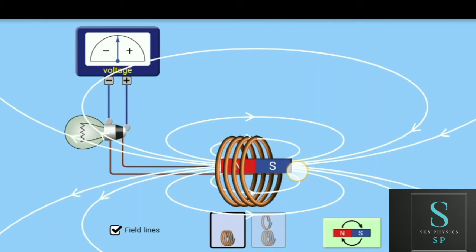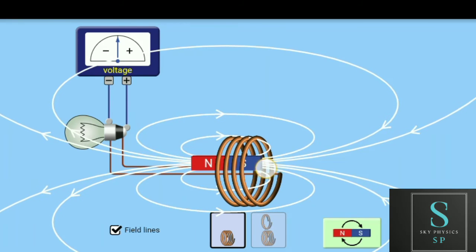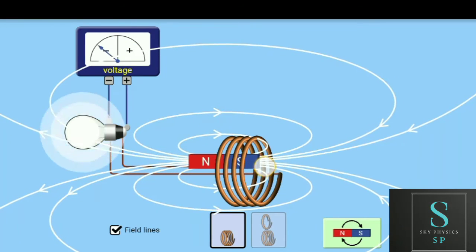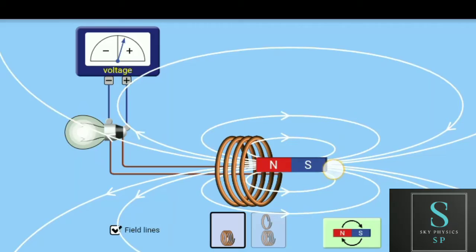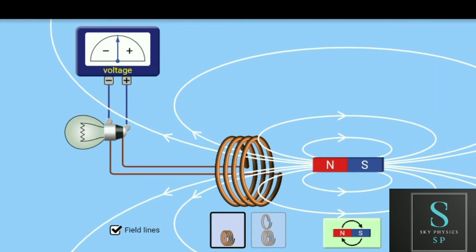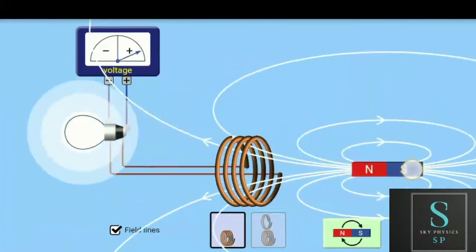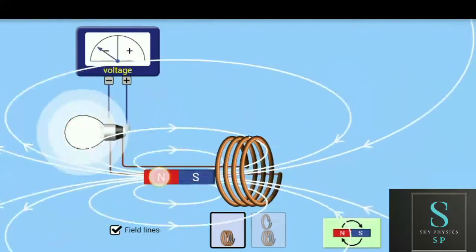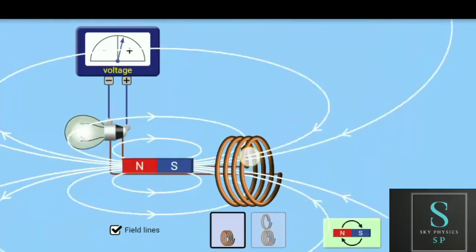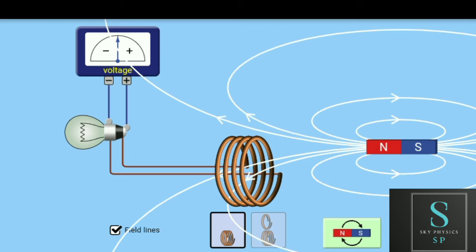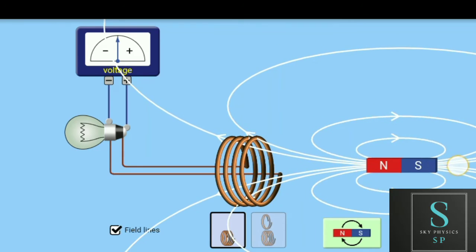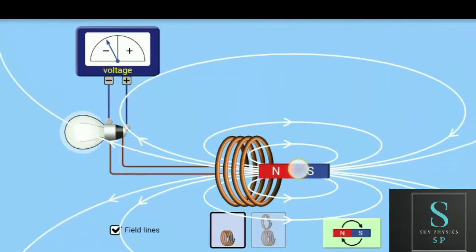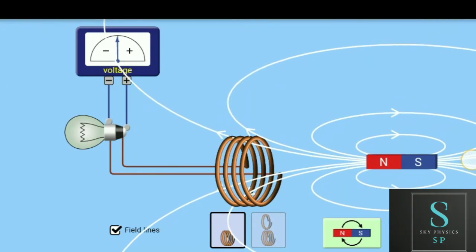If we move it in a constant way, are we getting any change? No. But if we change the speed, increase the speed a bit, you can see how much deflection we're getting. See how fast it deflects. So what we can say here is that if we move it constantly, the current value is zero and voltage deflection is minimal. But if we move it with high speed, we get larger deflection.